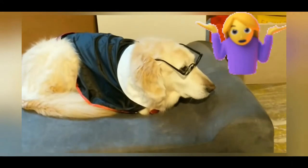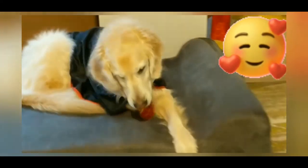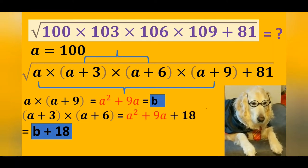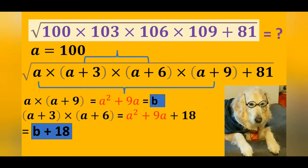Oh, sure mom. I will explain it in more detail. Oops. The result of the product of a and a plus 9 is a squared plus 9a. And the product of a plus 3 and a plus 6 is a squared plus 9a plus 18.